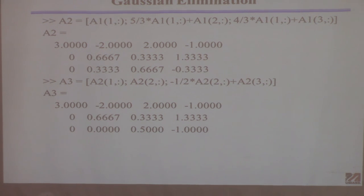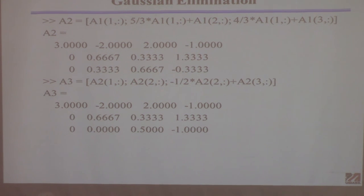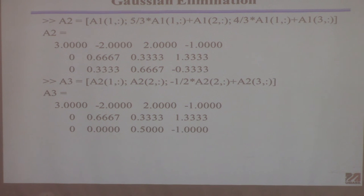The result should give you a new matrix A3 in MATLAB that looks like the triangular form shown. Then eliminate the remaining off-diagonal element: multiply that row by minus one-half and add it to the row below. Once you have that triangular form, you can back-substitute to find the solution.